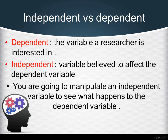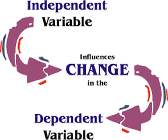The dependent variable is a variable that a researcher is interested in. The independent variable is the variable believed to affect the dependent variable. So our scientific statement is: you're going to manipulate an independent variable to see what happens to the dependent variable. The independent variable influences changes in the dependent variable.